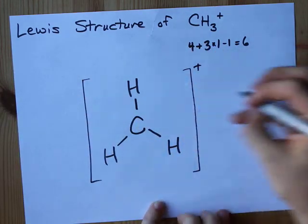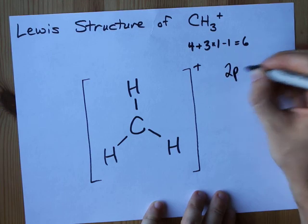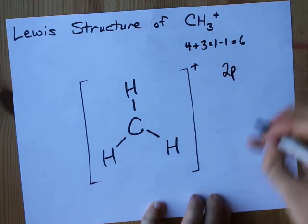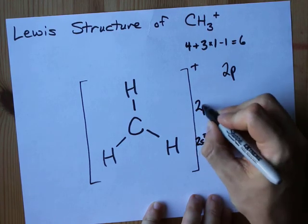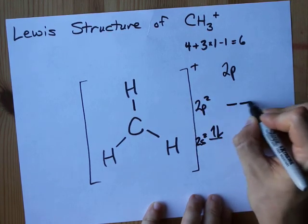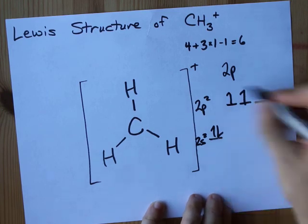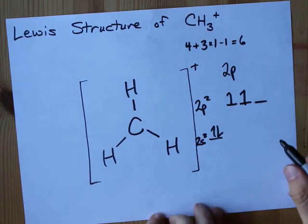The idea here is that the 2p subshell of carbon, normally I should point out carbon is 2s2 and 2p2. The electron configuration diagram looks like this.